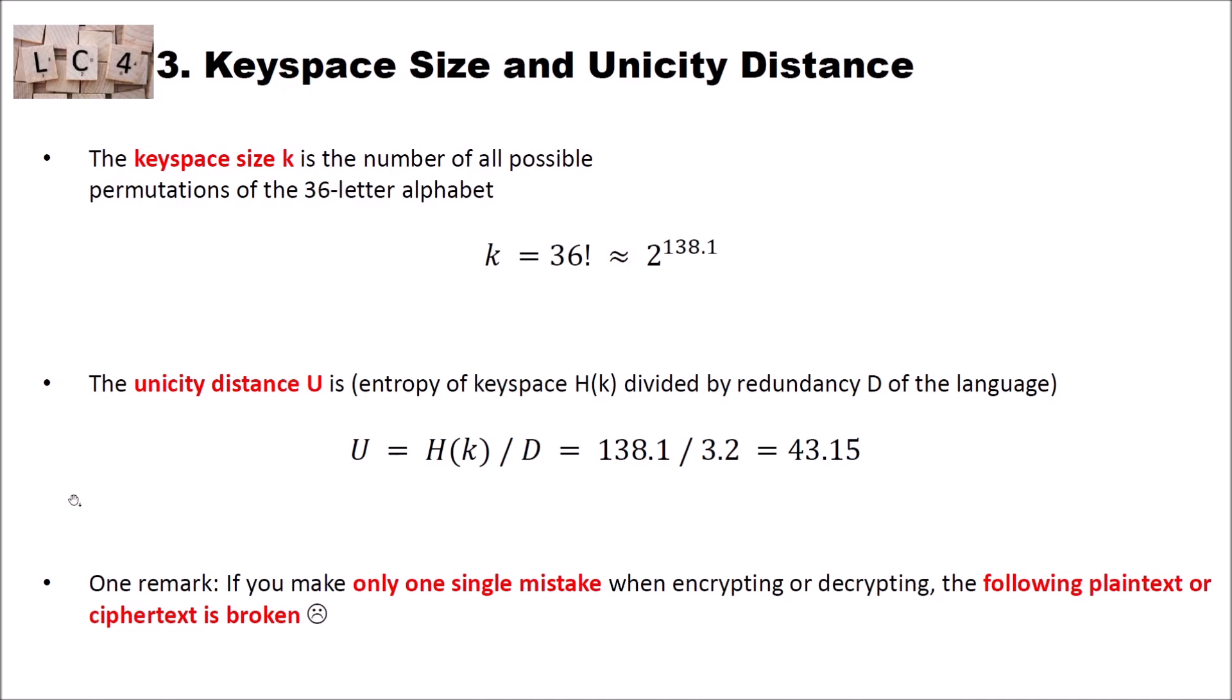And I have one final remark for this cipher. Despite this cipher is quite interesting and for a hand cipher quite strong, there's one problem. If you make only one single mistake when encrypting or decrypting, the following plain text or cipher text is broken. Because you would change the state of the grid and then nothing would work in our favor. Then we would get only wrong plain text or cipher text letters.